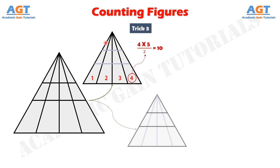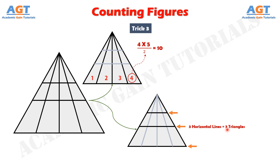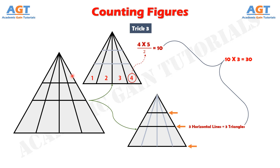Now ignore those lines and consider just the horizontal lines. Using trick number 1, we count the horizontal lines — here we have 3 horizontal lines, so the number of triangles due to these horizontal lines is also 3. We have 10 and 3, so simply multiply 10 and 3 to get 30. Thus 30 is the exact number of triangles in this figure created due to all these lines.